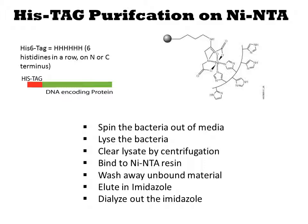The peptide binds tightly and specifically to nickel NTA, allowing you to wash out all the other proteins. The protein is then released from the column by elution with imidazole. This is the molecule matching the side chain of histidine. You must add imidazole at high concentrations, but it will compete for nickel ions and release the protein.